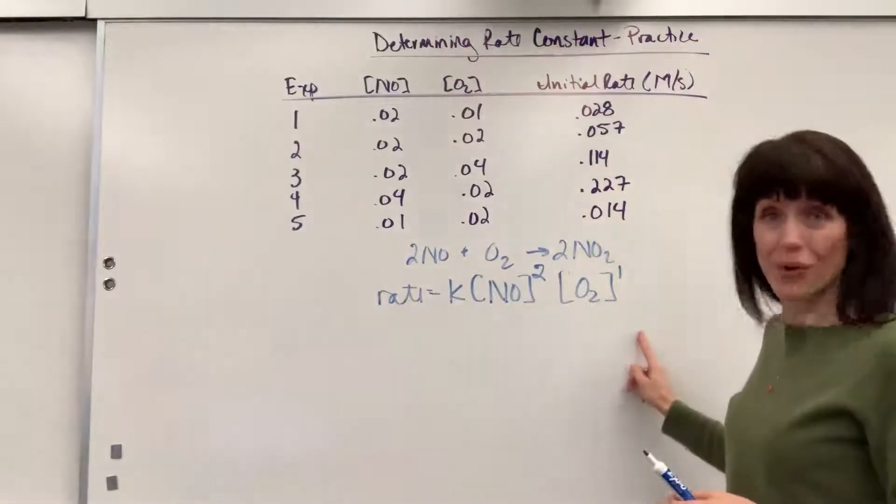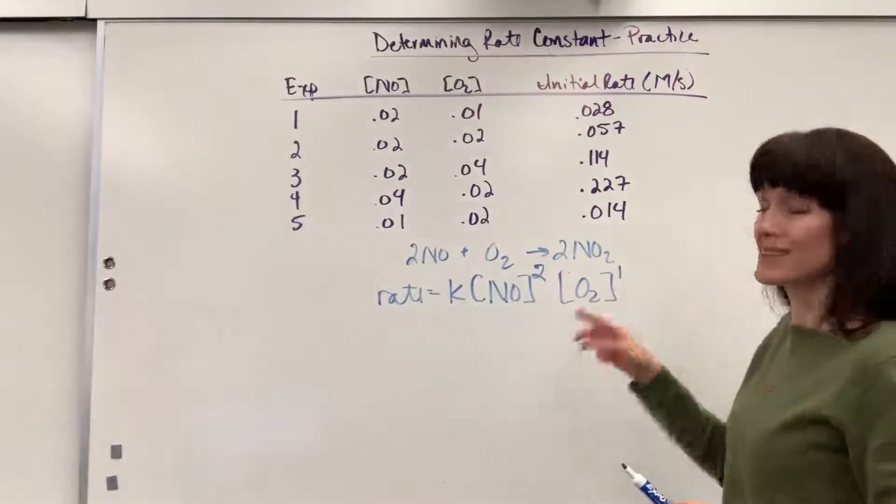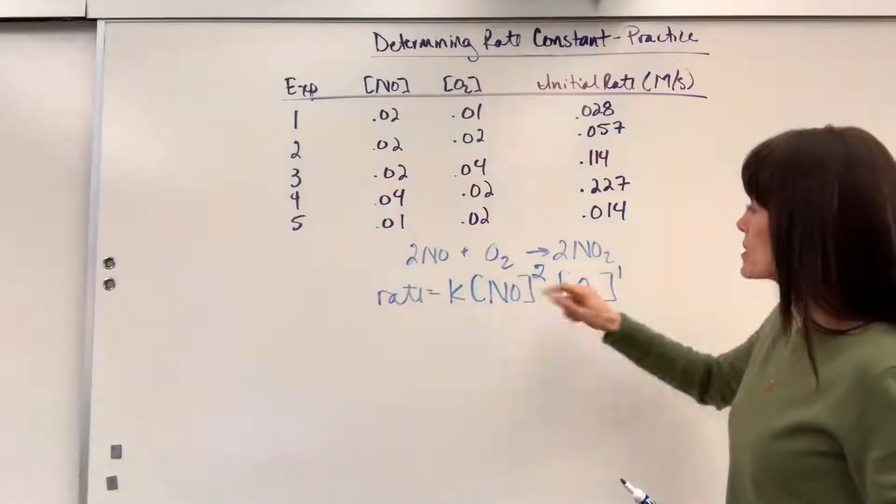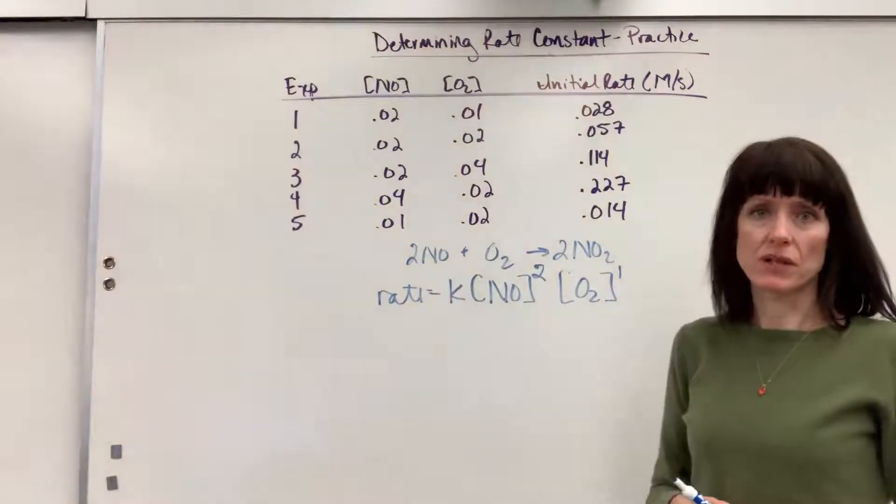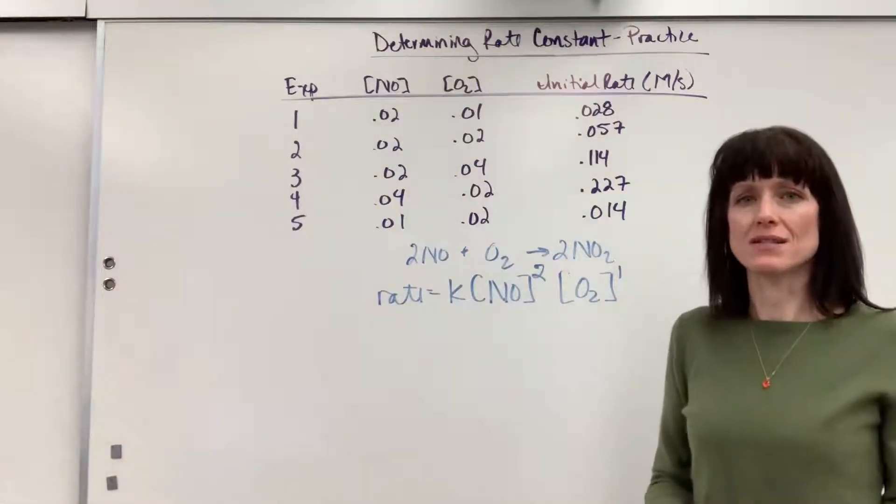It is an overall third order. Two plus one is three, so third order. The NO is second order, the O2 is first order. And the question would be, what's the rate constant?